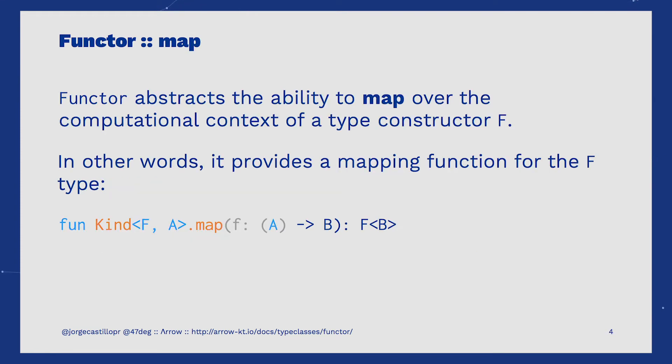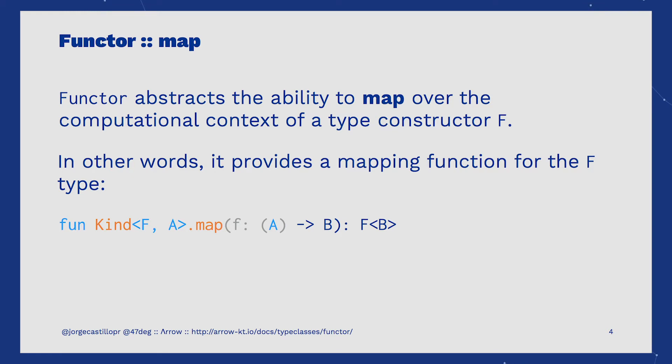The most important behavior provided by Functor is the map function. With map, we can map over the computational context of the type constructor F. This just means that you'll pass a mapping function that can operate over the wrapped value inside the type constructor, and then return the already mapped value wrapped again inside of the same context F. So you're basically providing a mapping function for the F type.